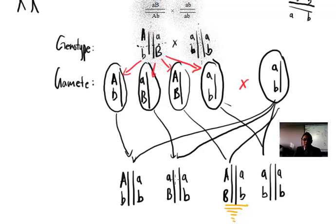Let's take a look at this one. Is this a new combination here? Little a big B, I see that here with a little a little b. That is also a new combination. I don't see that combination in the new parents, so this is also recombinant.